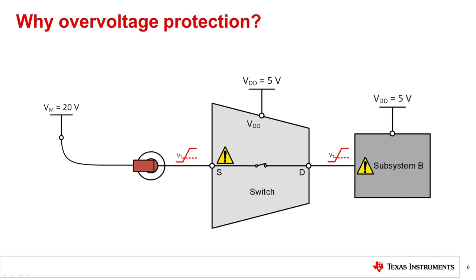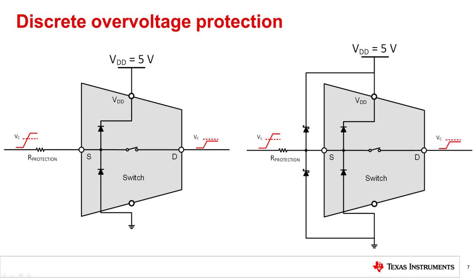To prevent overvoltage events, let's discuss how you can protect your system. There are discrete and integrated solutions to protect your devices from an overvoltage event. Here, you can see two simple circuits designed to achieve some level of protection. The figure on the left shows an example of a current limiting resistor on the sense line. This protects the internal ESD diodes from excess current.